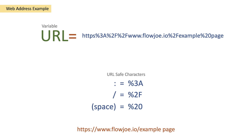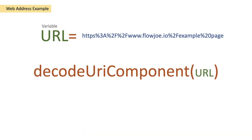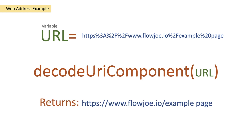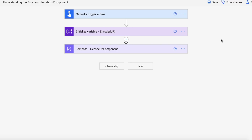What we do is pass the URL that has URL-safe characters into the decodeURIComponent function. When this runs, it returns a decoded URI component and gives us a decoded URL. Let's see this in Power Automate.